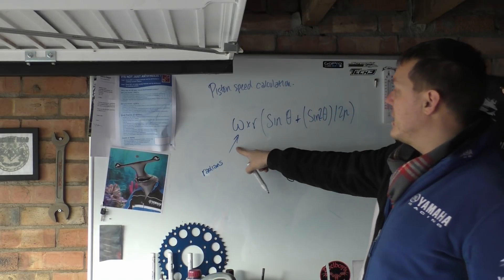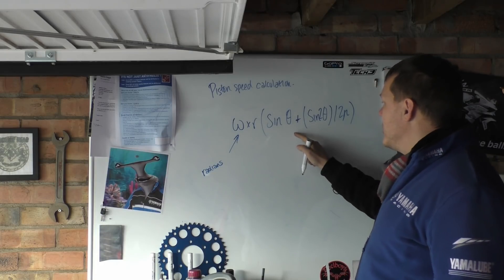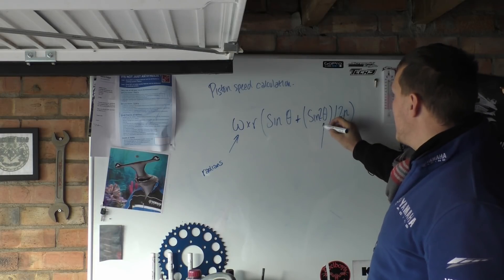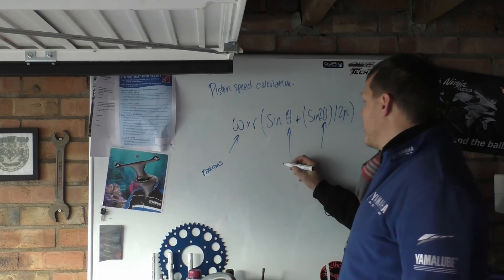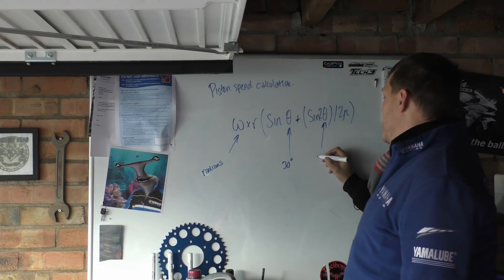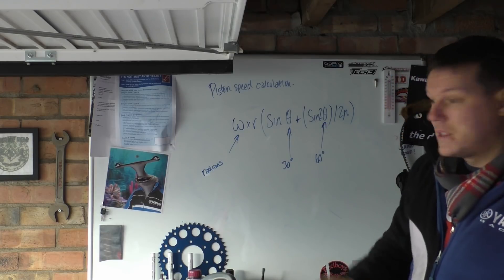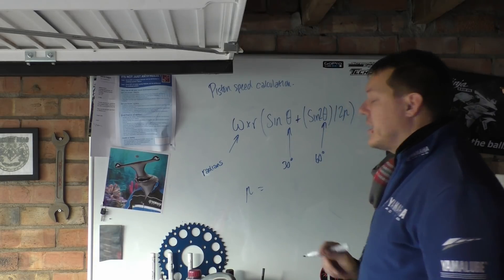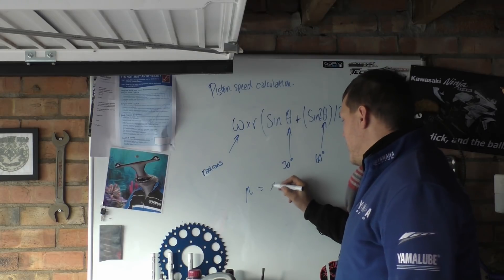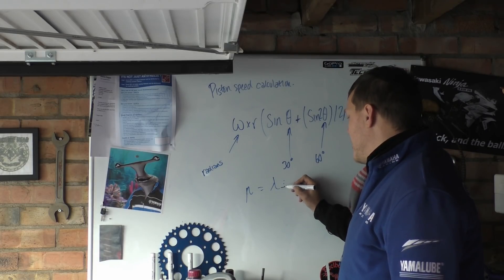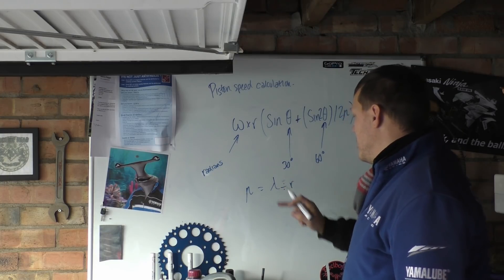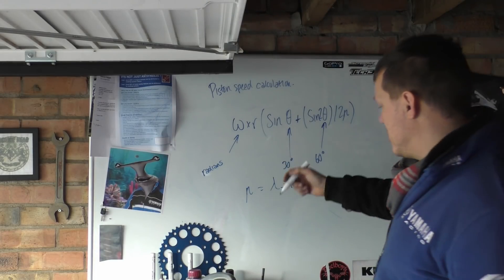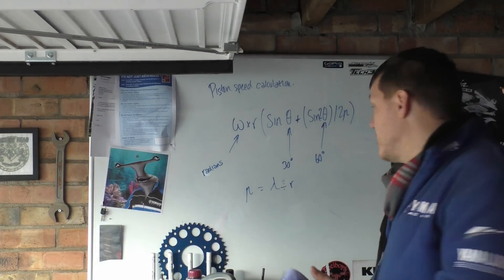So you've got your angular velocity times by your radius, and then you've got sine theta — these are all angles, specifically crank angles. So if you've got 30 degrees, that would go there, and 60 degrees because it's 2 times that angle. The n in all this is your conrod length divided by your crank radius — that's what's in the divided by 2n, and this is how you create these plots.